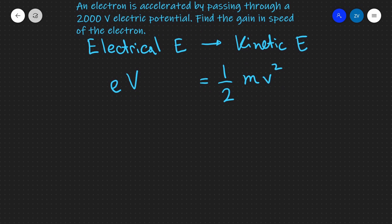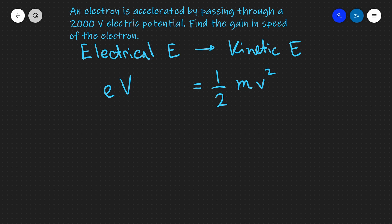So what we can do is just literally rearrange for the speed v of the electron. If I rearrange for v squared first, I'm going to bring the 2 over on the other side, and that's going to give me 2eV, and then I'm going to need to divide by the mass.